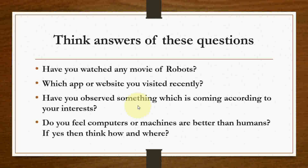Whenever you use such apps or websites, the information provided may come according to your interests or what you have done previously — that kind of advertisements and data they show you. For example, on YouTube they suggest videos based on what you have watched. That is part of AI. Also think: do you feel computers or machines are better than humans? If yes, think how and where.